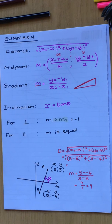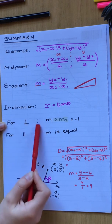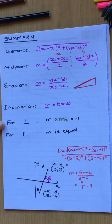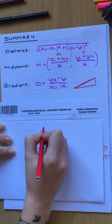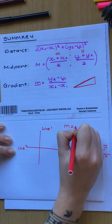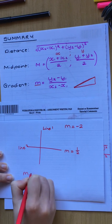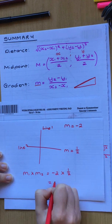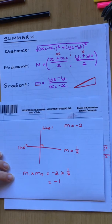There's one extra note I need to show you here. You guys know this is the perpendicular sign and that's the parallel sign. When two lines are perpendicular, if you multiply their gradients together, you will get negative one. So if line one's gradient is negative two and line two's gradient is a half, gradient one times gradient two equals negative two times a half, which gives you negative one. If something is perpendicular, multiplying their gradients will always give negative one.